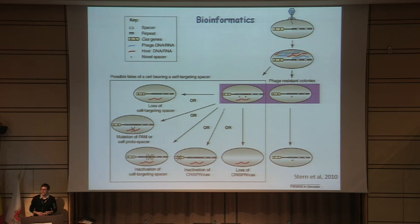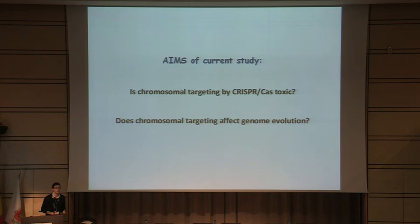They had seen mutations within the Cas genes, within the repeats, and similar features. That led to the aims of this current study: first, to address whether chromosomal targeting is in fact toxic; second, if it is toxic, what can be the result of that chromosomal targeting; and third, what can this do in terms of genome evolution?